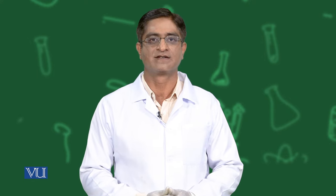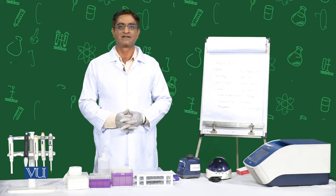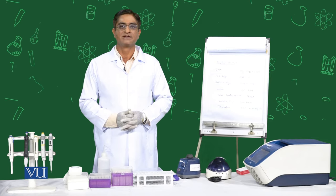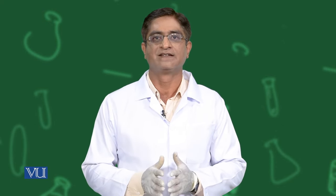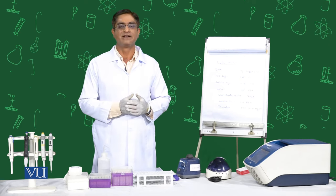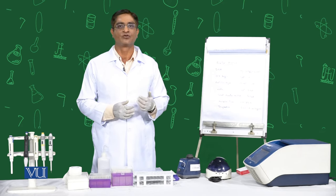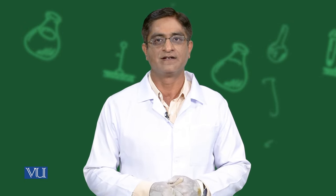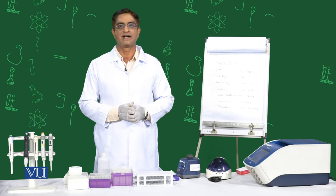Now we will discuss some applications of RFLP. RFLP is used in the diagnosis of different diseases like cystic fibrosis, and it is used to compare different sources of DNA. For example, we can detect the difference between human DNA and cat DNA because they have different numbers of recognition sites, so the enzyme cuts them into different numbers of fragments. RFLP is also used for genetic mapping, as different enzymes cut different types of DNA into different fragments, allowing us to prepare genetic maps for different animals and organisms.